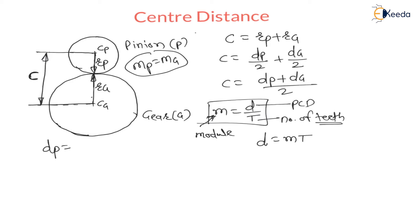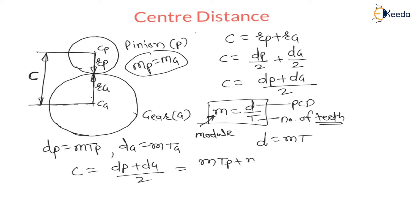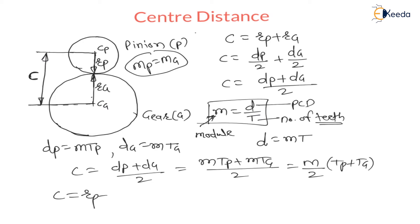Diameter of pinion equals module times number of teeth on pinion (m × Tp), and diameter of gear equals module times number of teeth on gear (m × Tg). Therefore, center distance C = (m·Tp + m·Tg) / 2 = m(Tp + Tg) / 2. That is, center distance equals module divided by 2, times the sum of teeth on pinion and gear, where Tp is number of teeth on pinion and Tg is number of teeth on gear.